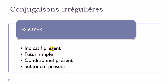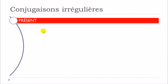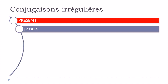We're talking about l'indicatif présent. We will see that le futur simple will be concerned as well, and then conditionnel présent and subjonctif présent. For the other tenses, these verbs will behave like all the other regular verbs ending with E, R. So let's see now le présent.